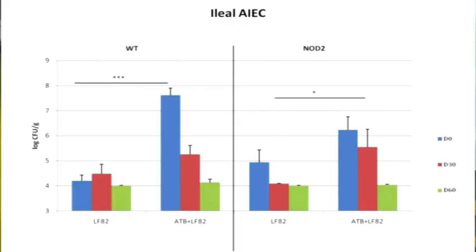Persistent colonization of LF82 was still observed at D30 only in the ileum of wild-type and NOD2 mutant mice treated by antibiotics, as shown with red bars, confirming the ileal tropism of our model. LF82 translocation in mesenteric fats and mesenteric lymph nodes was observed at D0 in wild-type and NOD2 mutant mice treated by antibiotics, but persisted at D30 only in NOD2 mutant mice, underlining the importance of NOD2 in the preservation of intestinal integrity.